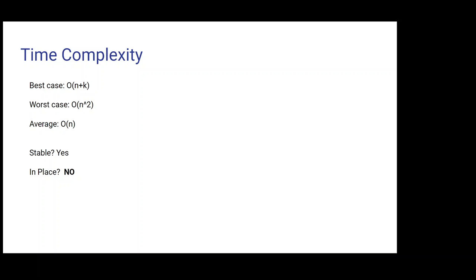Is the bucket sort algorithm stable? Unlike my relationship. Just kidding. It is stable with a caveat. The caveat is if the internal sorting algorithm that's used to sort the elements in the buckets is stable, then it'll be stable. But if it's not stable, then it'll be unstable.